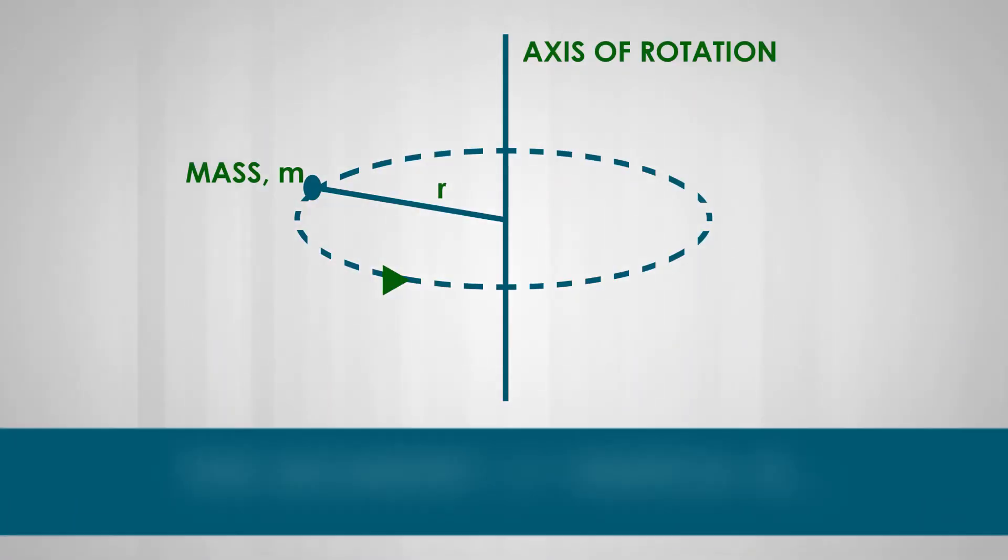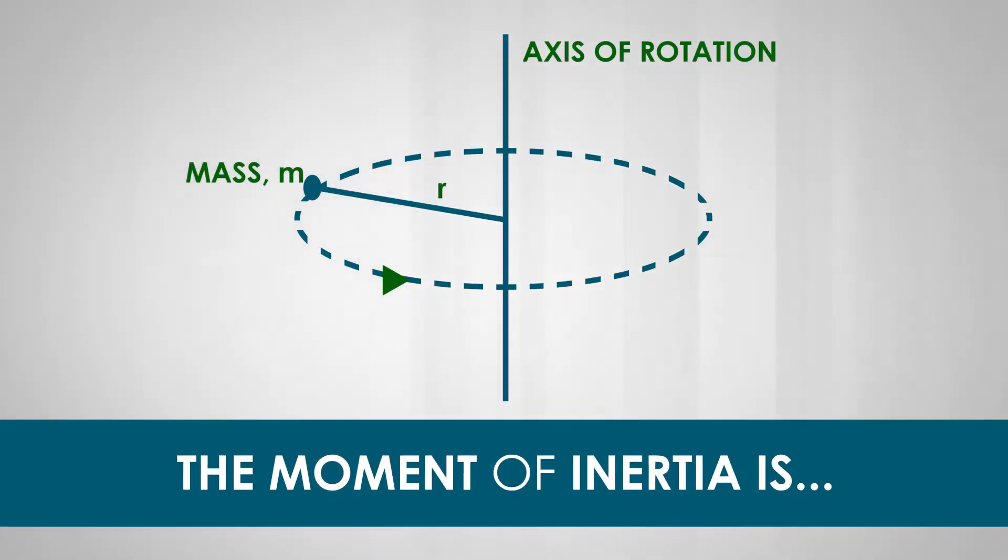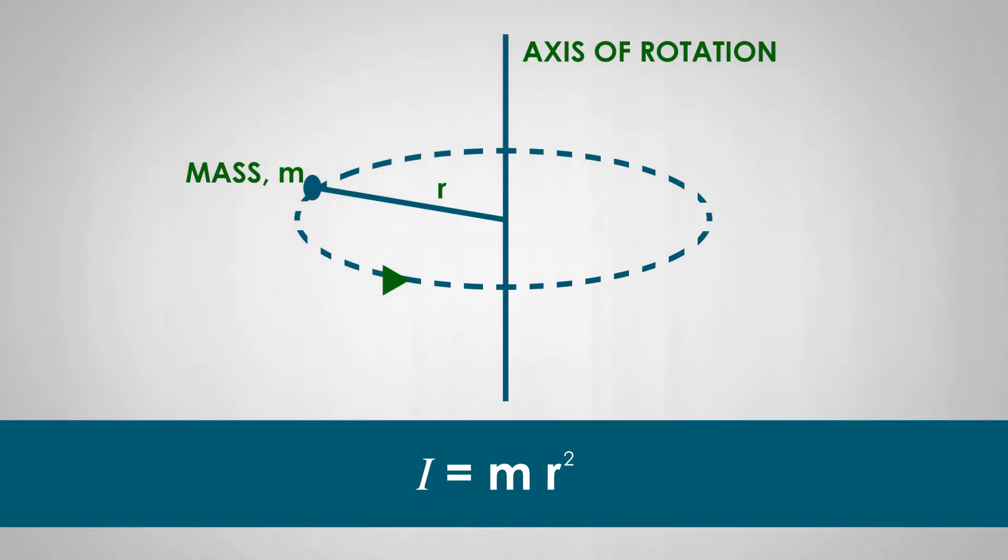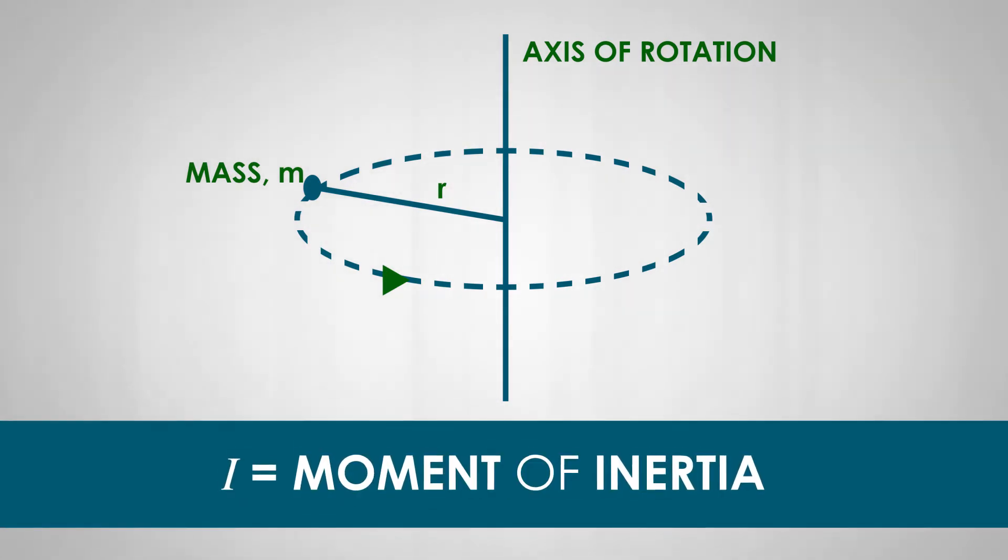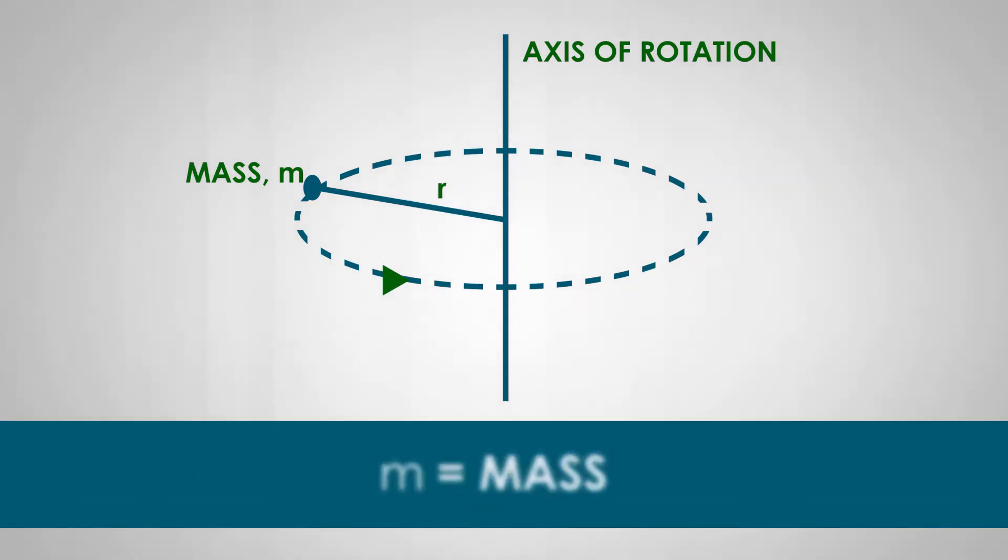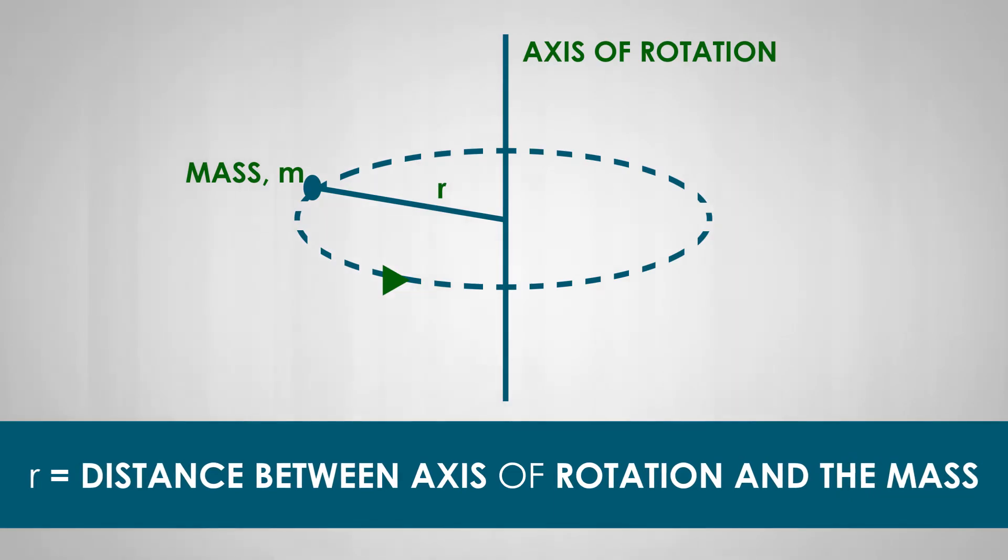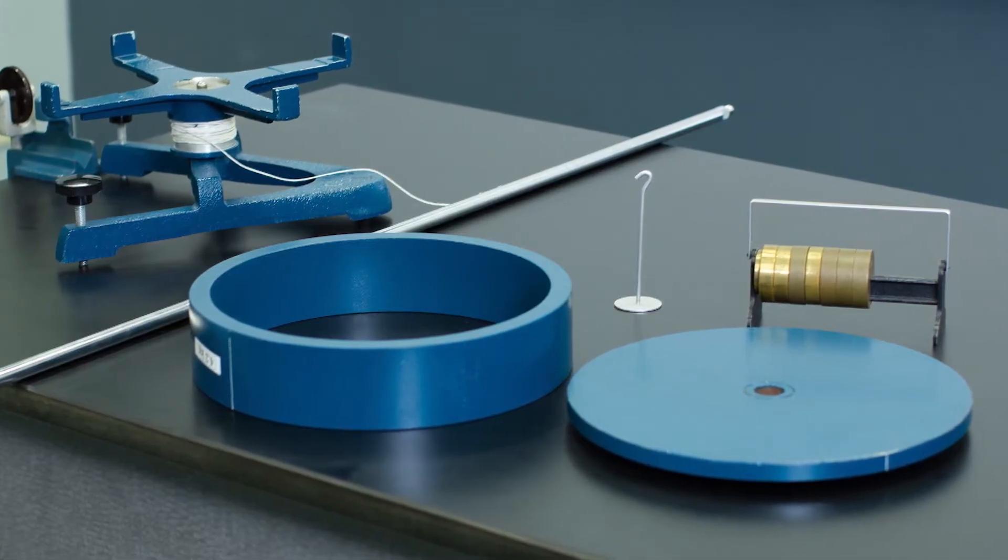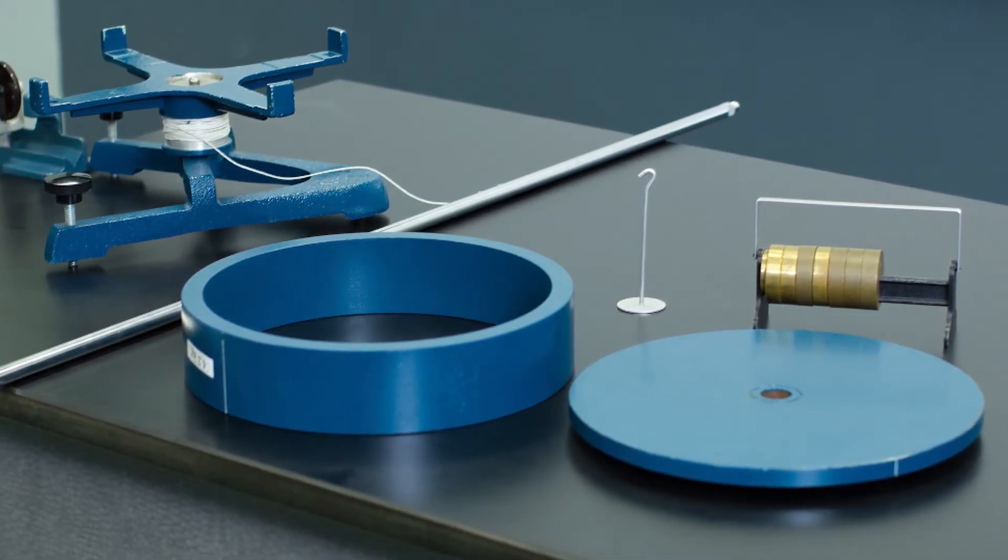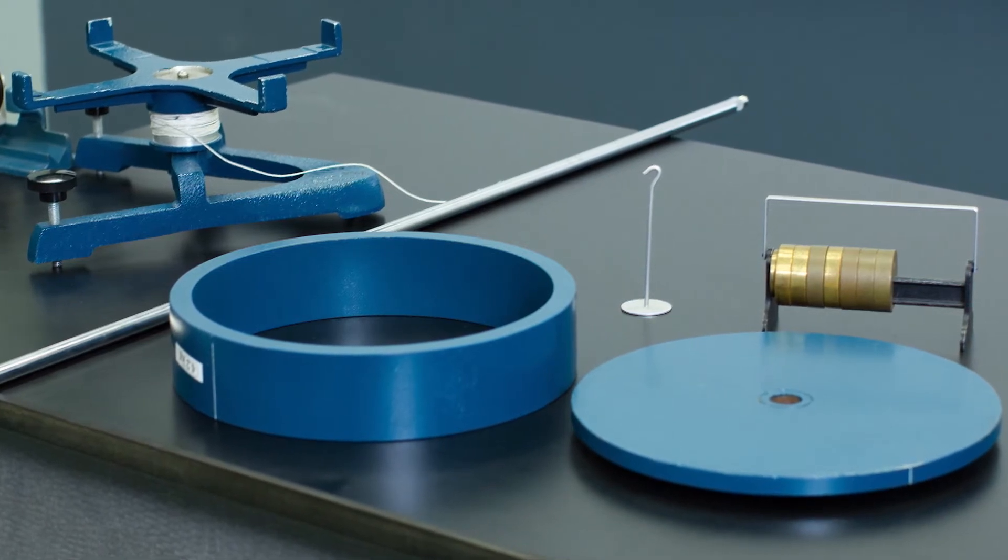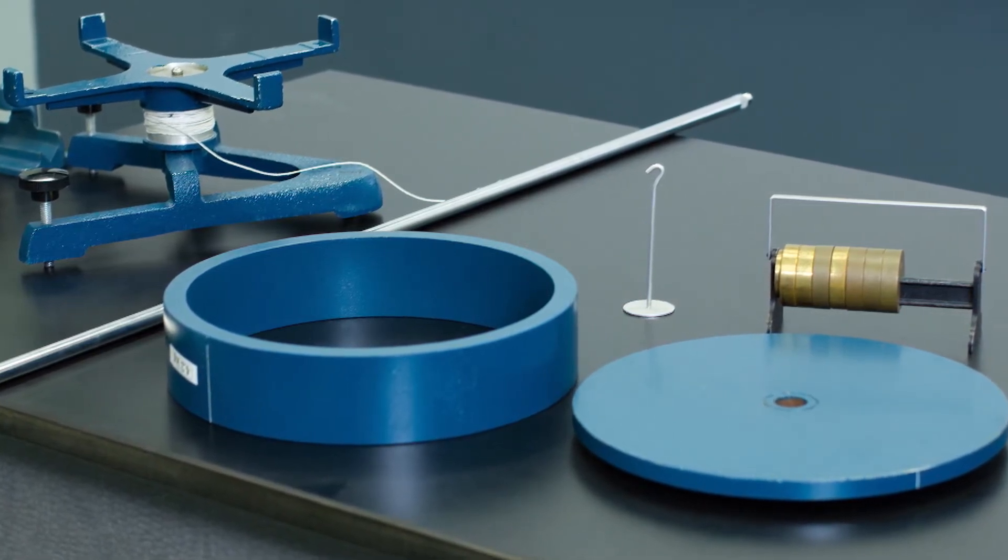For a point mass, or a very small object, the moment of inertia is I equals MR squared, where I equals moment of inertia, M equals mass, and R equals distance between axis of rotation and the mass. For large rigid bodies, like this disk or rod, the moment of inertia is obtained by adding together the moment of inertia of all the different parts of the object.